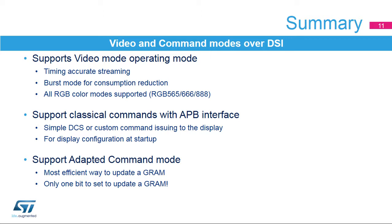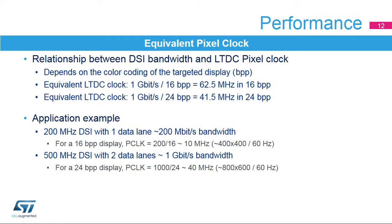The DSI-Host supports commands through its APB interface. DCS or generic commands can be issued to the display even when video mode is working, and commands are used for display configuration at startup and for maintenance operations when the application is running. The DSI-Host can also use adapted command mode to update a display's graphics RAM without using the CPU or DMA controller. This mode works using the LTDC to transmit write commands to the display. In terms of performance, there is a relationship between the equivalent pixel clock and the DSI-Host configuration — depending on the color coding, the number of data lanes used, and the speed of the data lanes, we can evaluate the equivalent pixel clock.